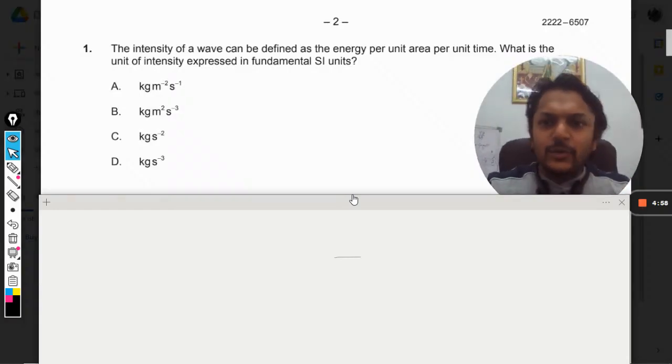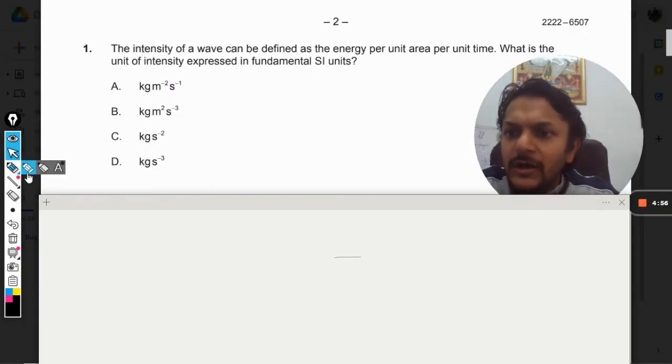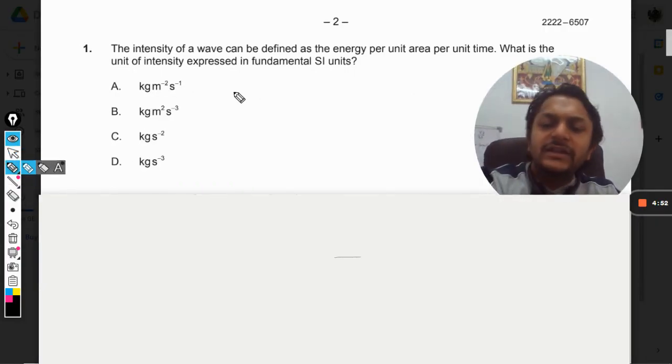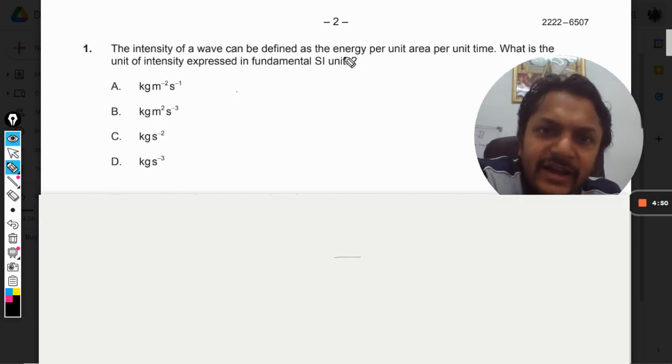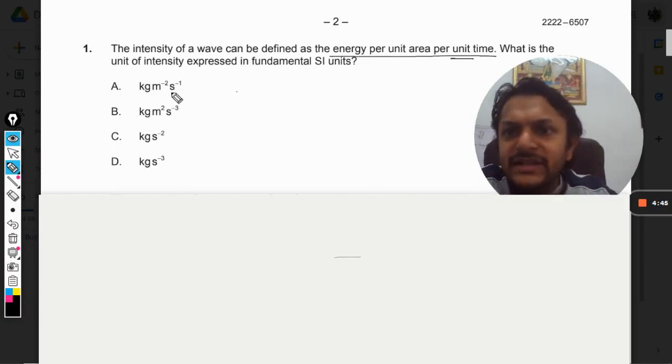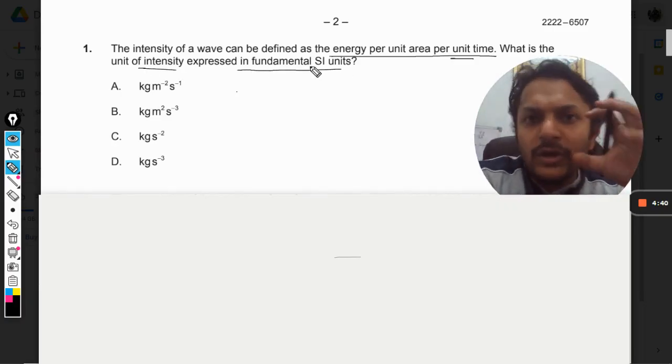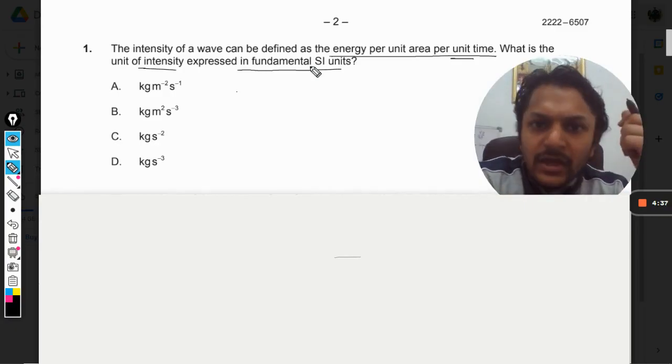Okay dear students, let us see what is there in this question. The intensity of the wave can be defined as energy per unit area per unit time. What is the unit of intensity expressed in the fundamental SI units?